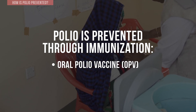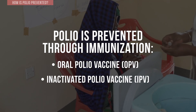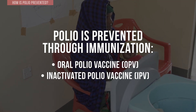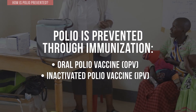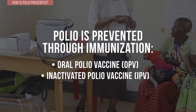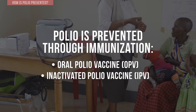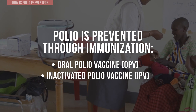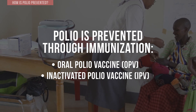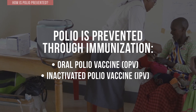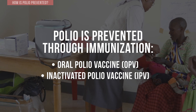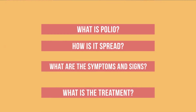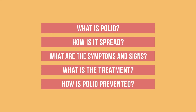and/or inactivated polio vaccine. The WHO recommends that all countries using only OPV add at least one dose of IPV to the routine immunization schedule. You should now have a better understanding of polio and how it can be prevented.